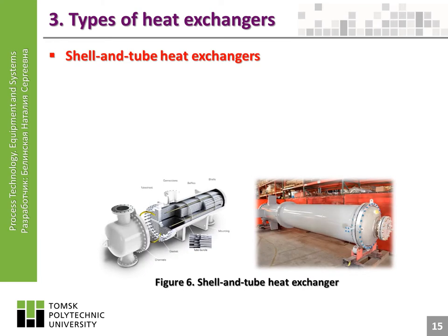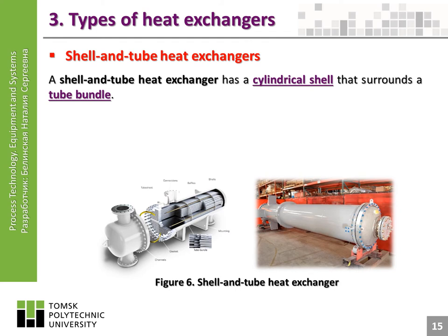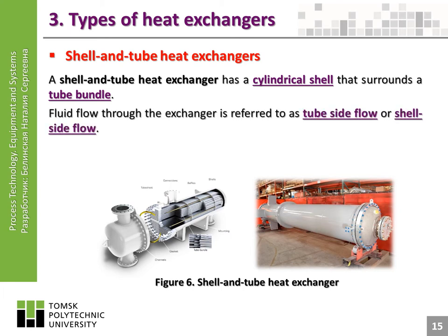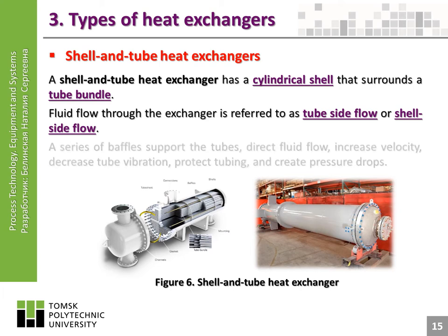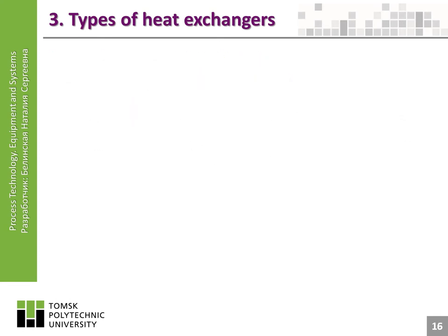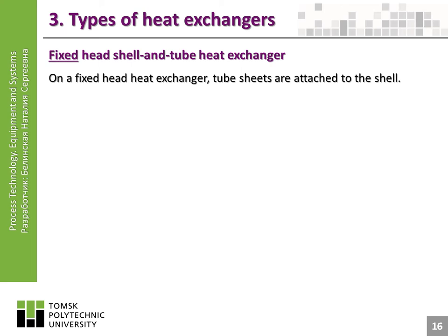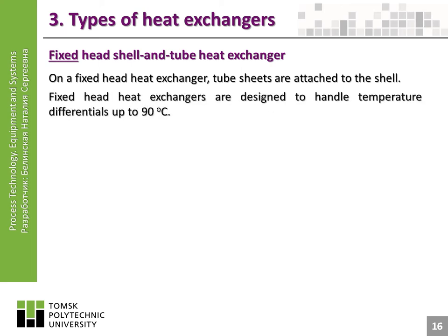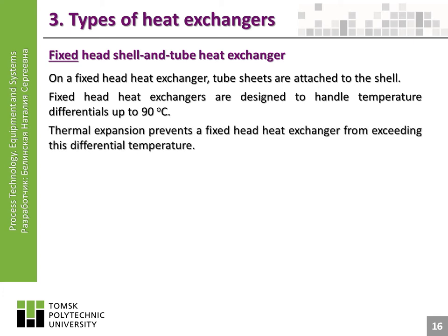Shell and tube heat exchangers. A shell and tube heat exchanger has a cylindrical shell that surrounds a tube bundle. Fluid flow through the exchanger is referred to as tube side flow or shell side flow. A series of baffles support the tubes, direct fluid flow, increase velocity, decrease tube vibration, protect tubing, and create pressure drops. On a fixed head heat exchanger, tube sheets are attached to the shell. Fixed head heat exchangers are designed to handle temperature differentials up to 90 degrees Celsius. Thermal expansion prevents a fixed head heat exchanger from exceeding this differential temperature. It is best suited for condenser or heater operations.